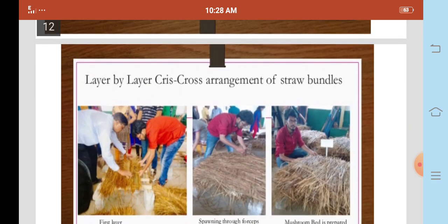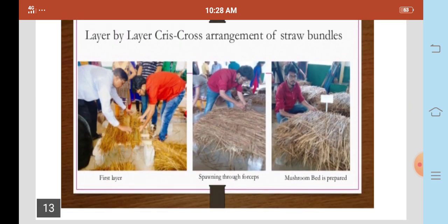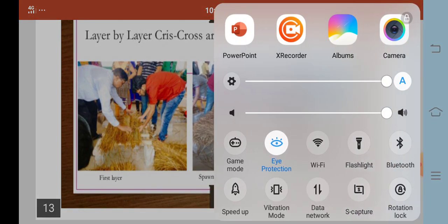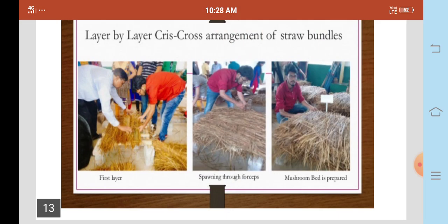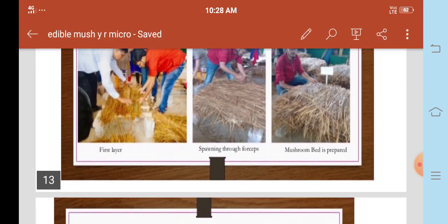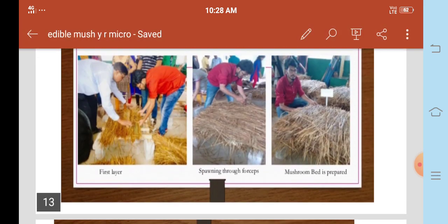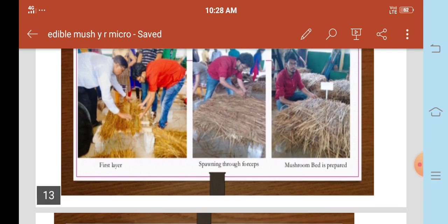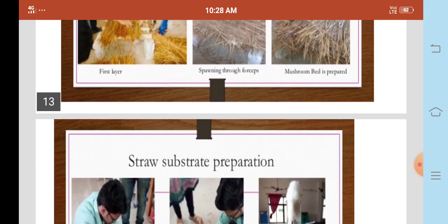Layer by layer, crisscross arrangement of straw bundles. The first layer is spanning through the bed preparation. First layer, second layer with wood chips, and third one is mushroom spawn is prepared.